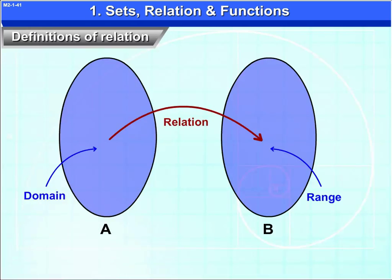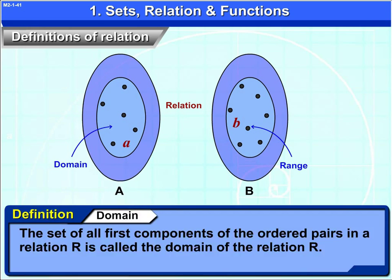Domain, range and co-domain can mathematically be represented as. The set of all the first components of the ordered pairs in a relation R is called the domain of the relation R.